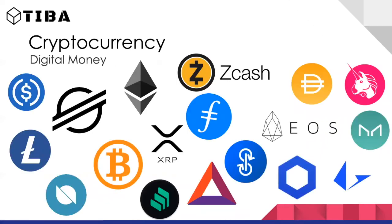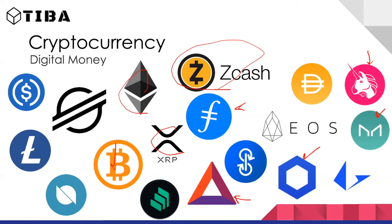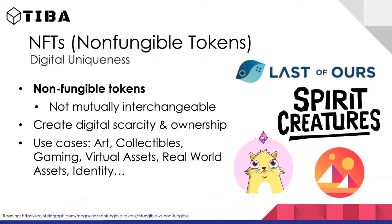There are many cryptocurrency projects out there — Bitcoin, Ethereum, Zcash (like Bitcoin but with ZK proofs), Uniswap, MakerDAO, Chainlink, Basic Attention Token for Brave, XRP, Filecoin, and many more. There's also NFTs — non-fungible tokens — meaning each token is unique and not mutually interchangeable. This allows digital ownership and scarcity, useful in collectibles, gaming, identity, and virtual or real-world assets.